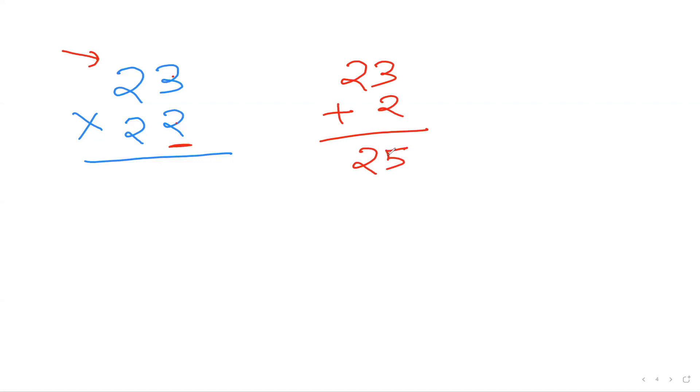Once you get that number, you're going to multiply this with a common number. So my common number here is 2. My common number is 2. So that's what I'm going to multiply. That's my second step. So 25 times 2 is 50.